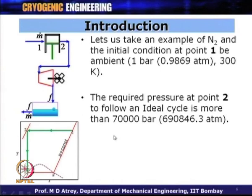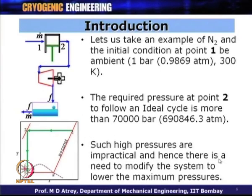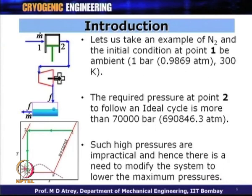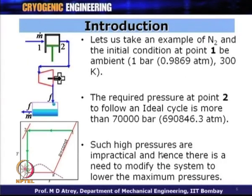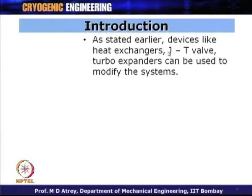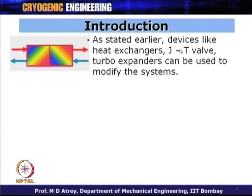What we conclude from here is that such high pressures are impractical, and hence there is a need to modify the system to lower the maximum pressure. The ideal thermodynamic cycle for liquefaction is impractical, and we have to modify it so that we lower the maximum pressures to those normally attainable using available compressors. Devices like heat exchangers, Joule-Thompson valves, and turbo expanders could all be used to modify the system and get a relatively practical cycle.